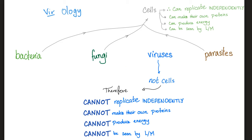Viruses are unique — unlike cells. What are cells? Cells can replicate independently, make their own proteins, produce energy, and can be seen by light microscopy. However, viruses are not cells. Why? They cannot replicate independently, cannot make their own proteins, cannot produce energy, and cannot be seen by light microscopy — only by an electron microscope.